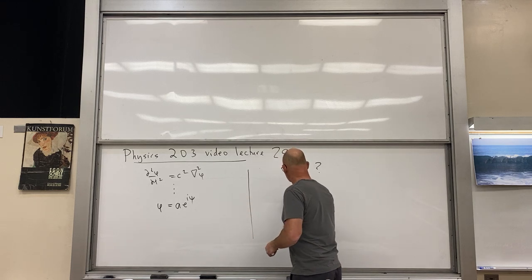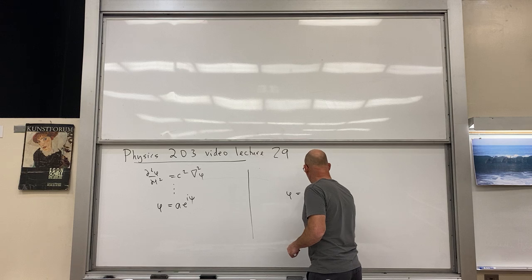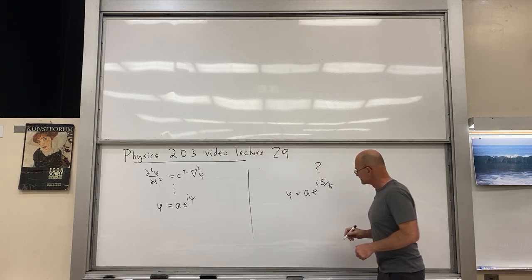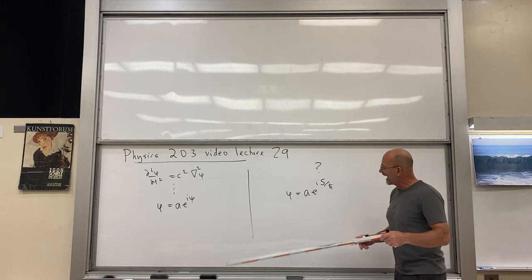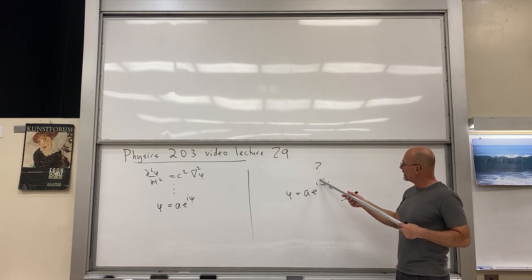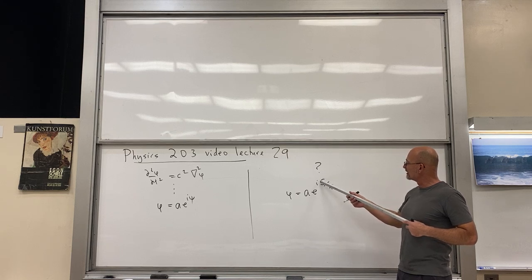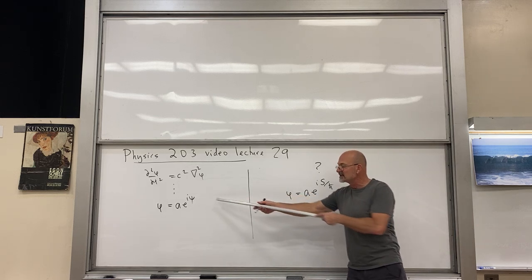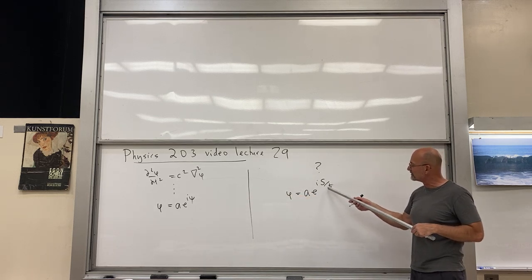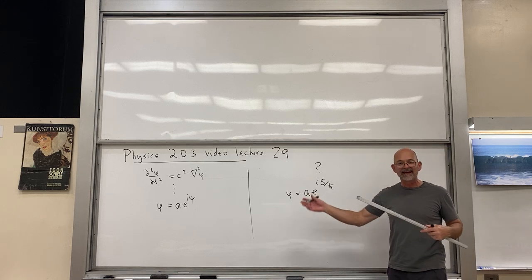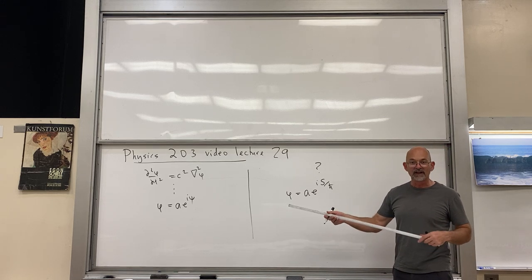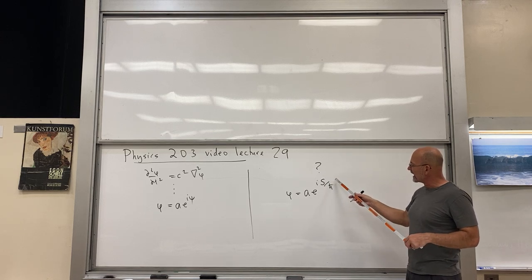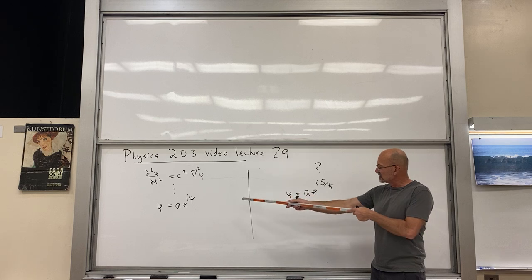So finally we were led to try this: φ equals A e to the i S over ħ. Now we had a formal parallel between S and C, but of course that phase is dimensionless and S is not, so we have to divide it by ħ. We could divide it by any action, but ħ was already known when this was first done. So when we divide it by ħ, we have the full analogy between these two.